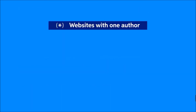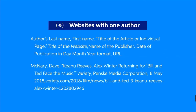For websites with one author, start with the author's name, last name first, then the first name separated with a comma. End this section with a period. The title of the webpage or article is placed in quotation marks, with a period before the end of quotation. The title of the website is written in italics followed by a comma. If the name of the publisher differs from the name of the website, include it after the title. You will often find the website publisher at the bottom of the website, or under the About Us section.